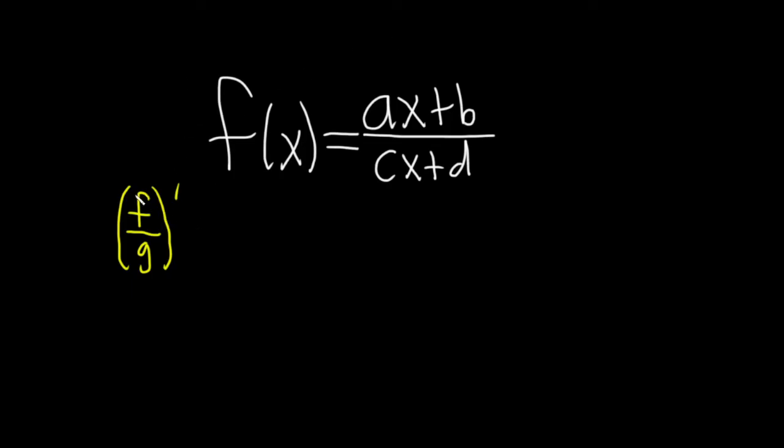The quotient rule says that when we have a fraction like this, if we think of f as our top function and g as our bottom function, it's going to be the derivative of the top times the bottom minus the top times the derivative of the bottom. It's all over the bottom one squared.